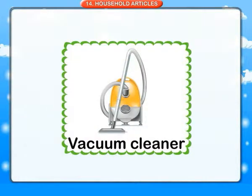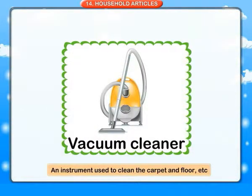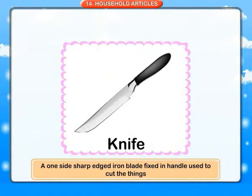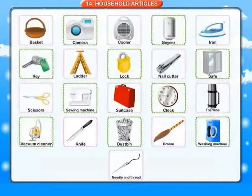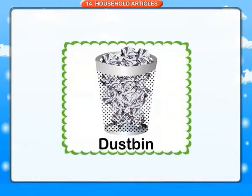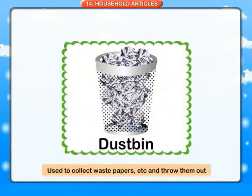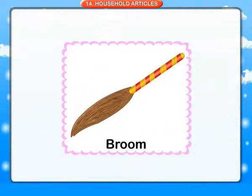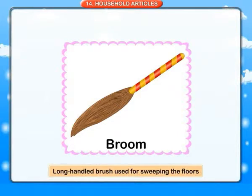Vacuum cleaner: an instrument used to clean the carpet and floor. Knife: a one-sided sharp-edged iron blade fixed in a handle, used to cut things. Dust bin: used to collect waste papers and throw them out. Broom: a long-handled brush used for sweeping the floors.